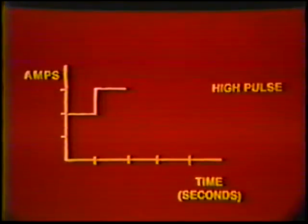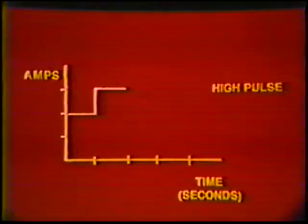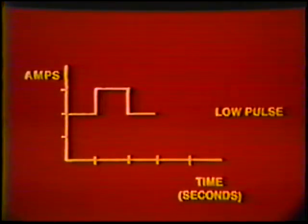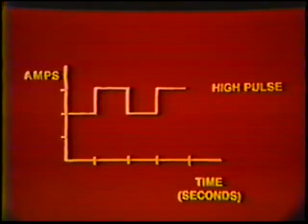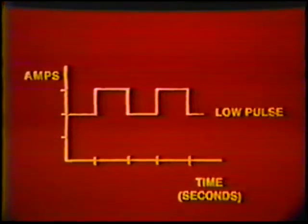If we look at a graph of the current level, we can see what is happening to it. We will slow the timing so that it can be explained while it is being shown. With the torch held at the starting point, the current quickly jumps up to the high level. While the high level stays on, the weld nugget is formed. The current then drops quickly to the low level, which allows the weld to cool. The next pulse of high level current melts another area under the new position of the torch. This cycle is repeated as the torch is moved along the joint to provide the desired weld.